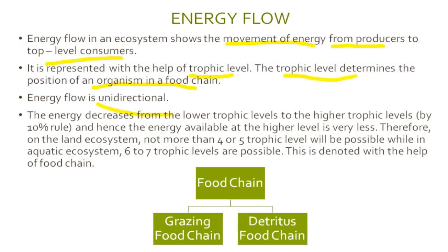Why is the flow of energy in an ecosystem said to be unidirectional? Because some energy is lost in the form of heat when moving from one trophic level to the next, for the maintenance of homeostasis of an organism. Thus, each successive trophic level receives less energy than the preceding one. Energy decreases from lower to higher trophic levels by the 10% rule.